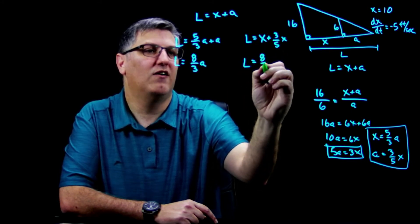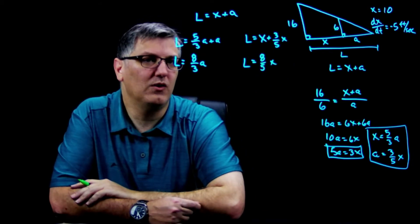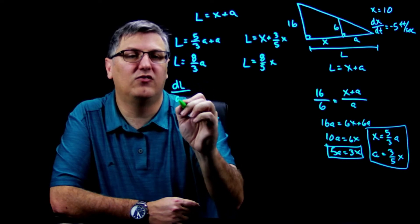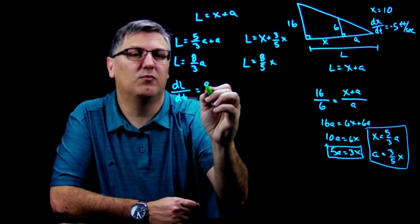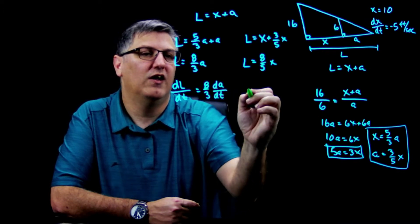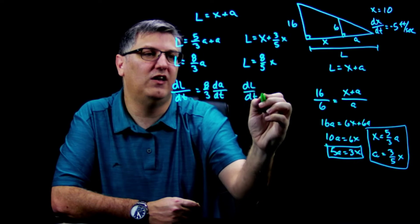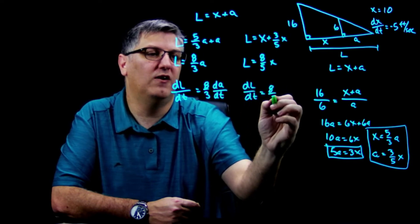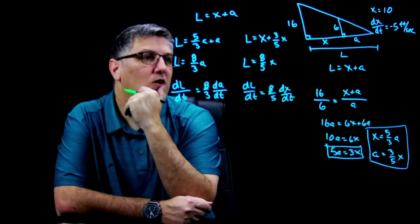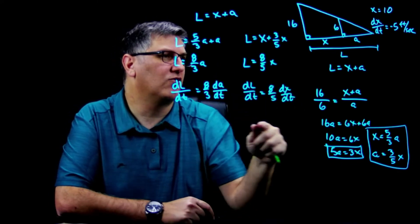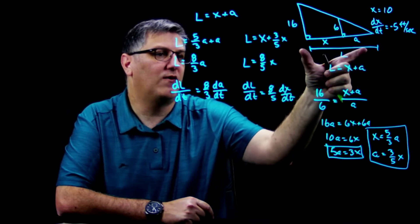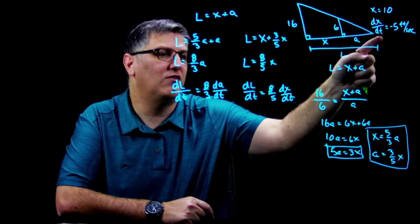All right, let's take the derivative of both of these, see what happens. I get a dL/dt gives me eight thirds da/dt, and then I have a dL/dt equals eight fifths dx/dt. All right, so I don't have a da/dt but that was something I was looking for because that's going to tell me how fast the tip is moving. The dL/dt tells me how fast the shadow is moving, but I do have a dx/dt right here, so let's start there.